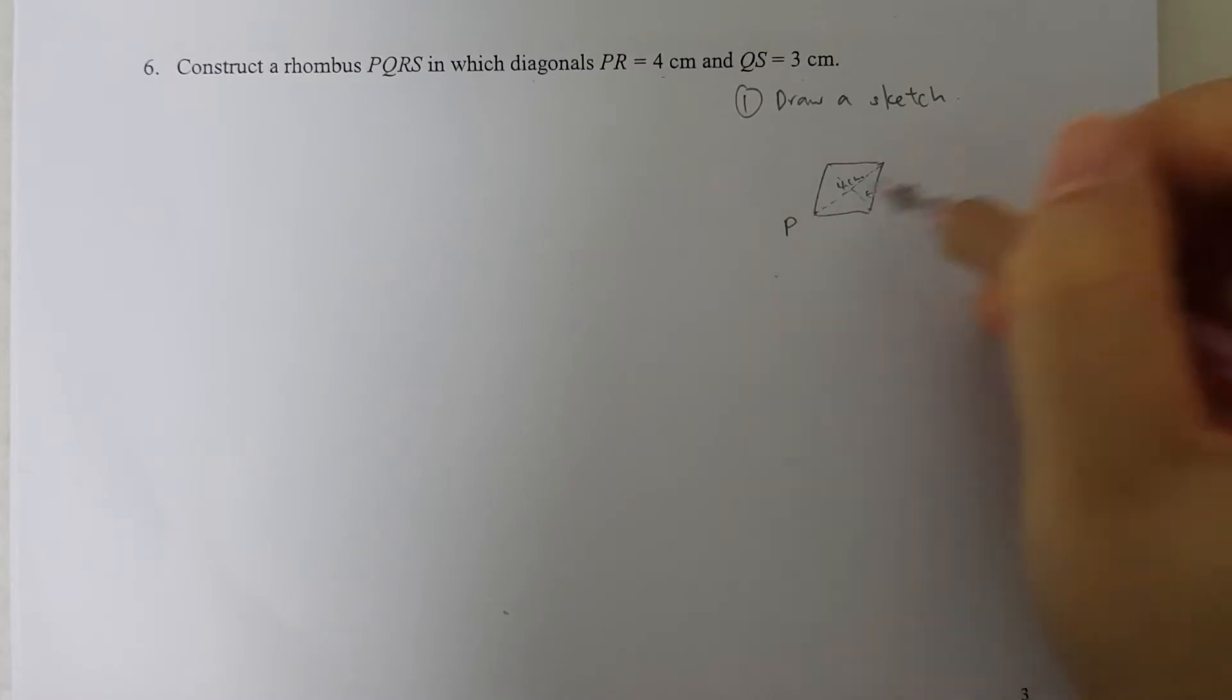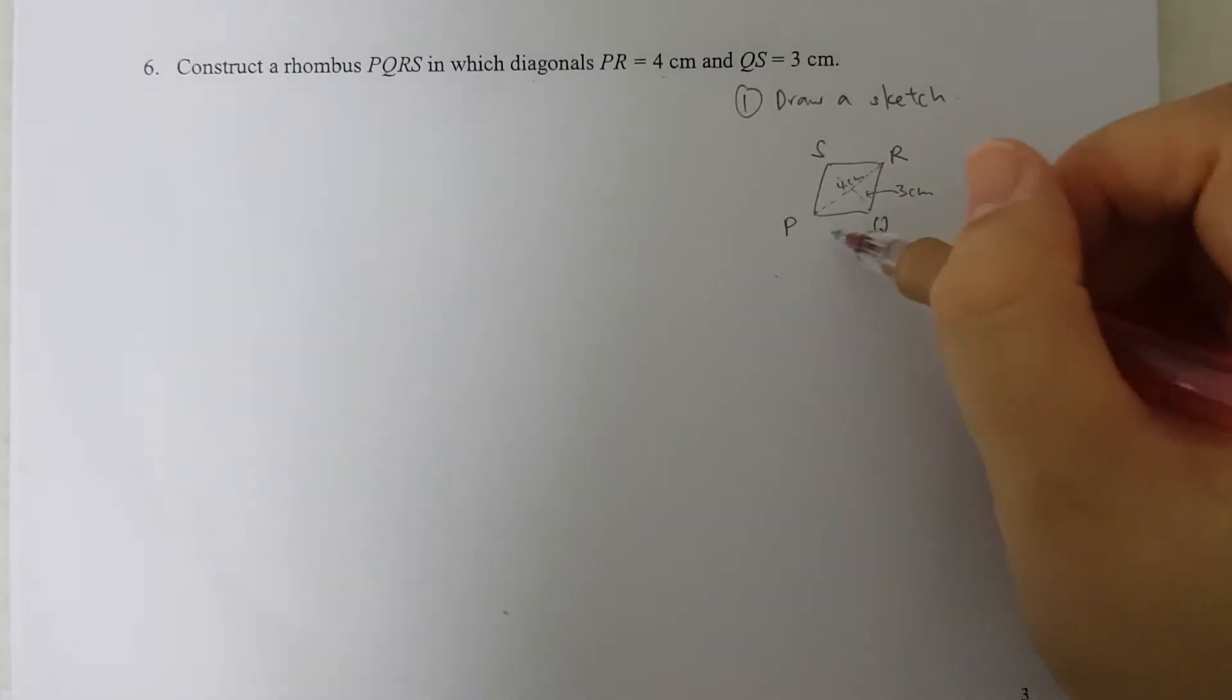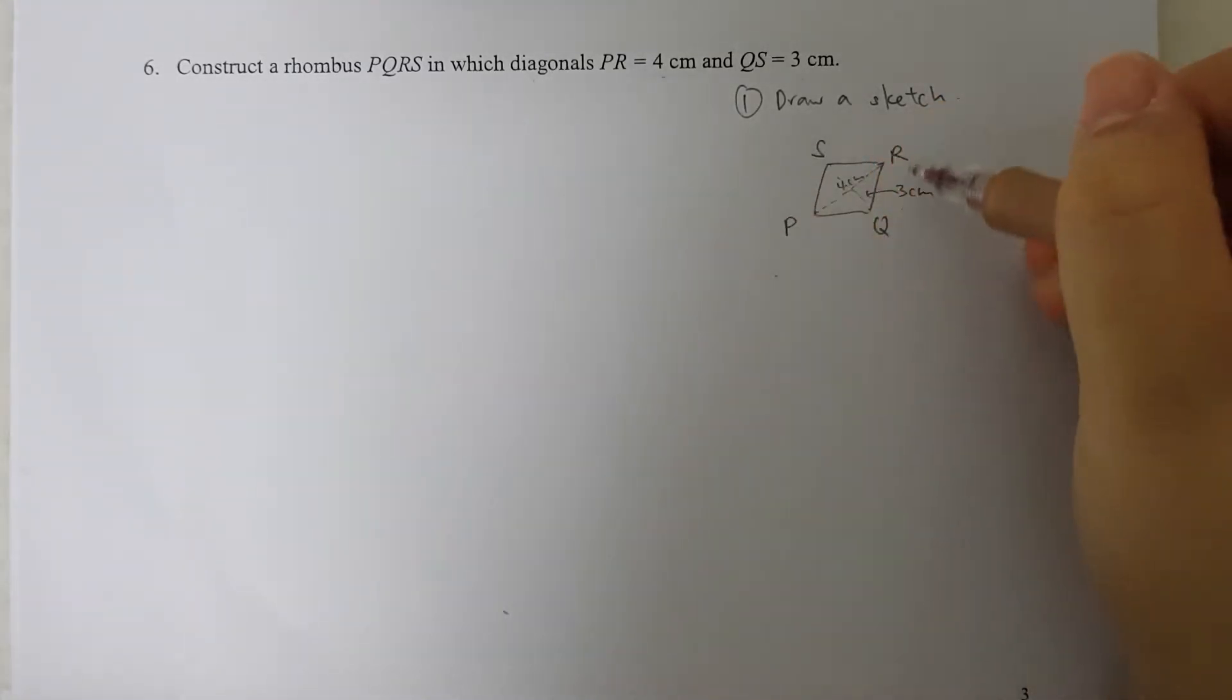So PR is 4 cm and QS is 3 cm. I'll do a quick check that the vertices are labeled in either a clockwise or anticlockwise manner. PQRS is in anticlockwise manner, so this sketch is okay.